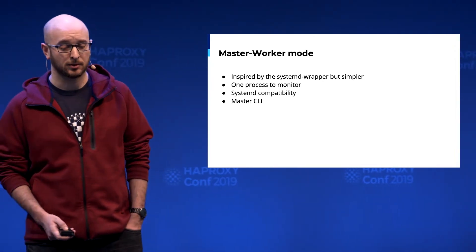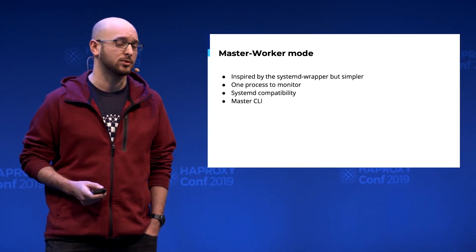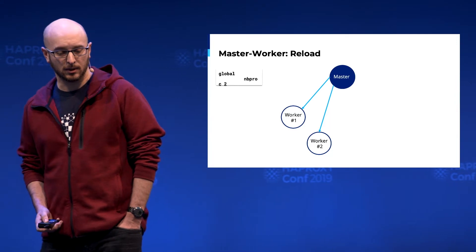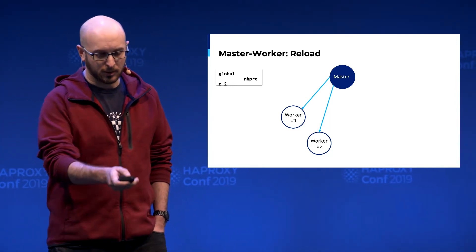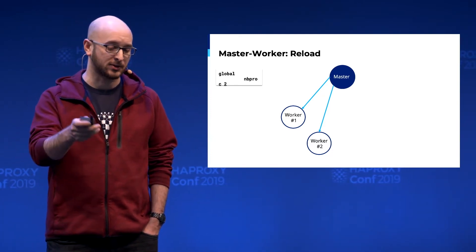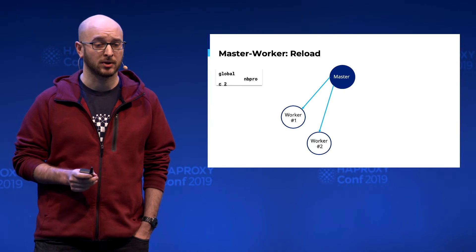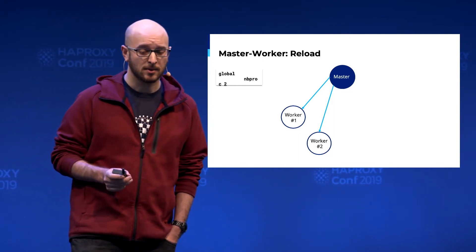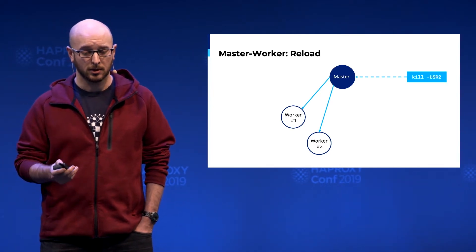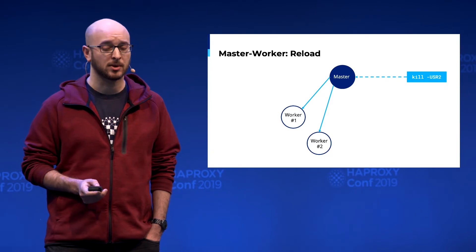There is a feature which is the master CLI, which is basically a stats socket connected to the master process. It's the same configuration with nb-proc 2. In this architecture, you can see that there is a master and two workers. The workers are still independent — they still don't communicate with each other — but the master is able to communicate with the workers. If you want to reload, you have to send the USR2 signal. This is what is done in the systemd unit file.